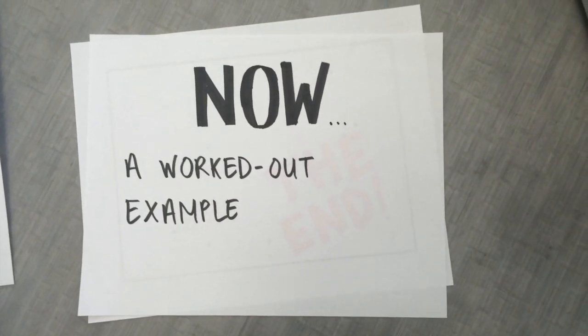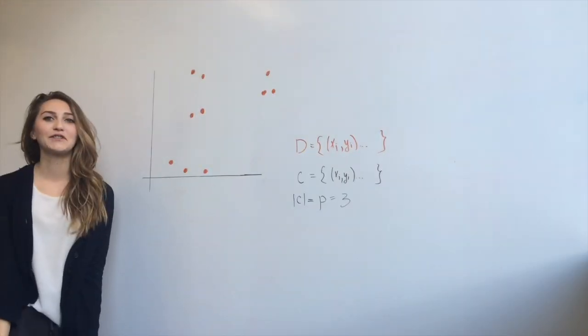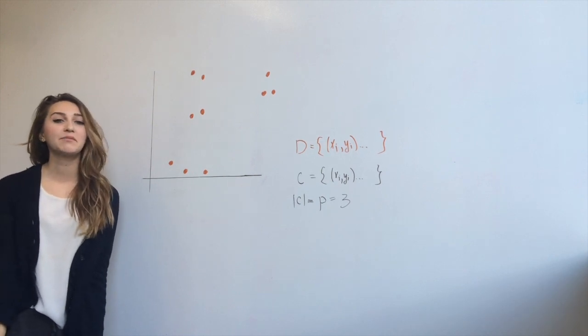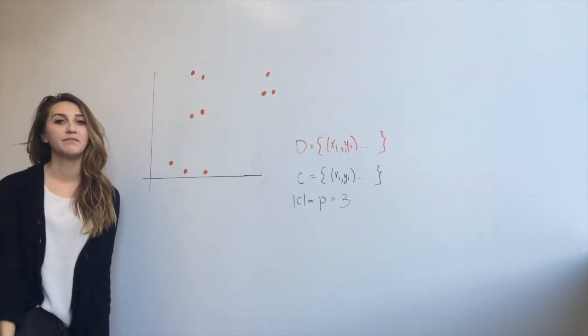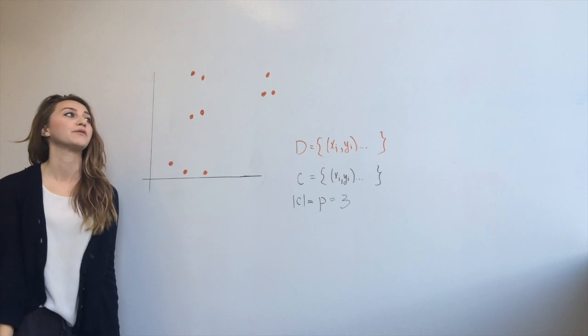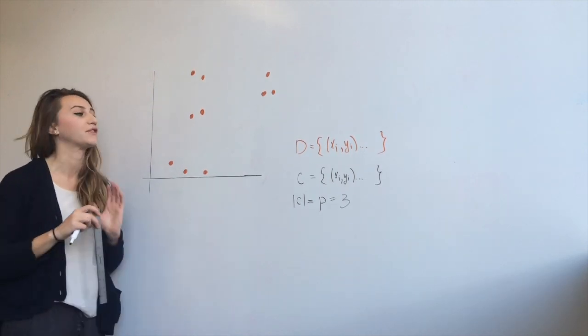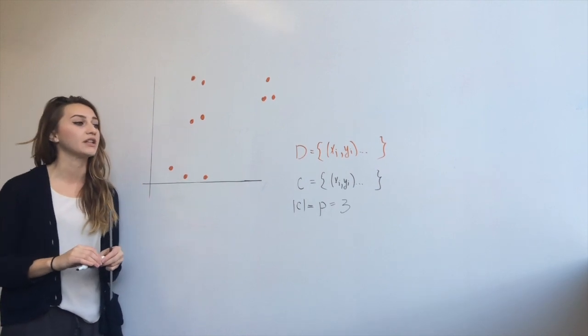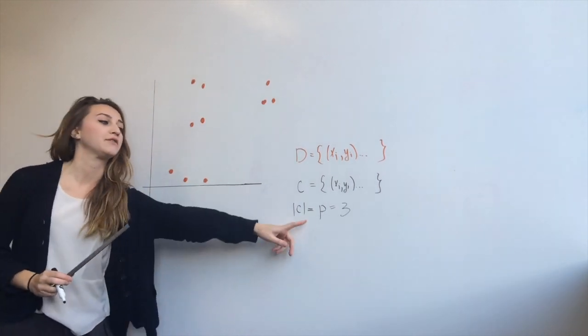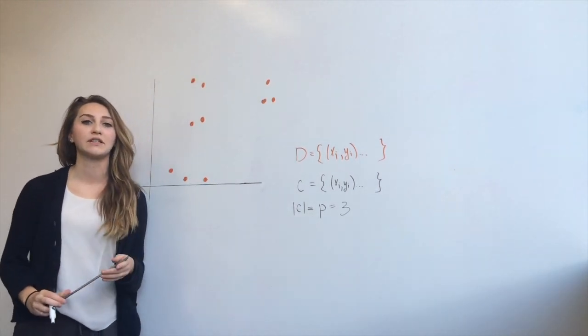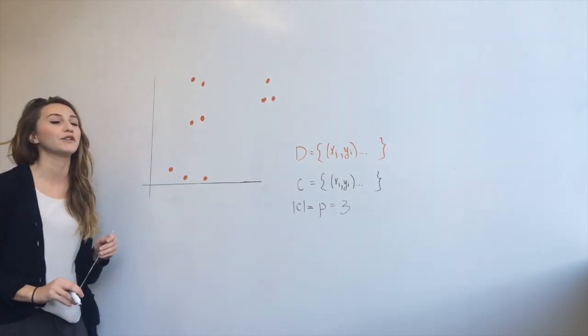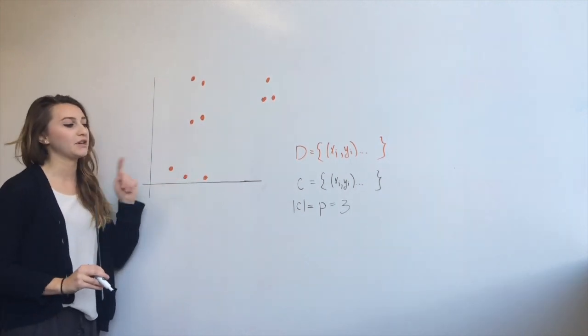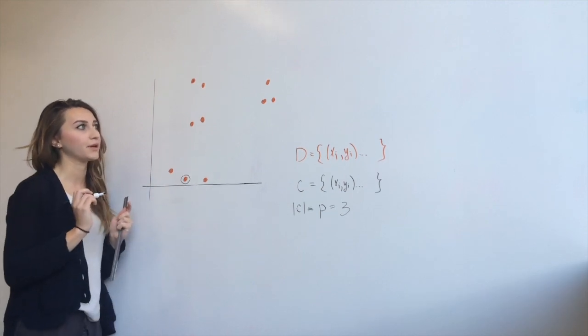Now, a worked out example. I'll explain the farthest first traversal algorithm. This is an approximation to the p-center problem, and its approximation factor is 2. The algorithm begins by first selecting a random point, which will serve as your first center in the solution. In our case, we were given the value p equals 3, so we're solving for three centers. The first point that we will choose is this one right here. I'll circle it so that you can remember.